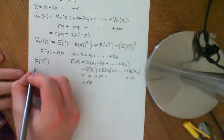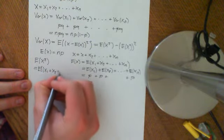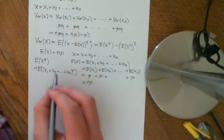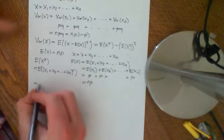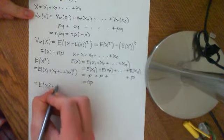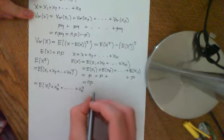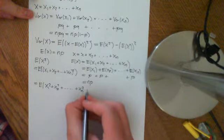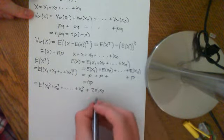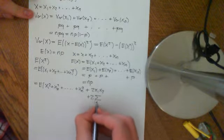In a similar theme, we can say that the expected value of x squared is equal to the expected value of (x1 plus x2 plus all the way up to xn), all squared. So now let's just square this out. You'll end up with x1 squared plus x2 squared plus all the way up to xn squared, and then you'll end up with a cross term — plus 2x1x2 and all of those cross terms.